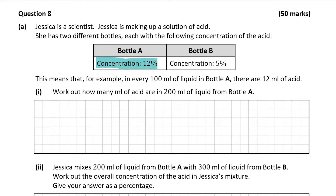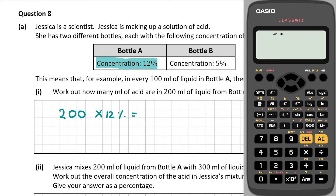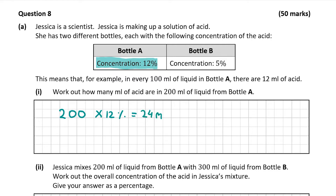We have two ways to do this. We know that for every 100 millilitres there's 12 millilitres of acid, so in 200 millilitres we could just multiply 12 by 2. I'm going to show a different way just in case you're not given that example, because not every year will you be given an example like that. We know there's 200 millilitres in bottle A and the concentration is 12%, so we multiply 200 by 12%. Type in 12, click shift, then the answer button with the percentage sign in yellow above it. So 200 by 12% equals 24 — there's 24 millilitres of acid in 200 millilitres of liquid from bottle A.